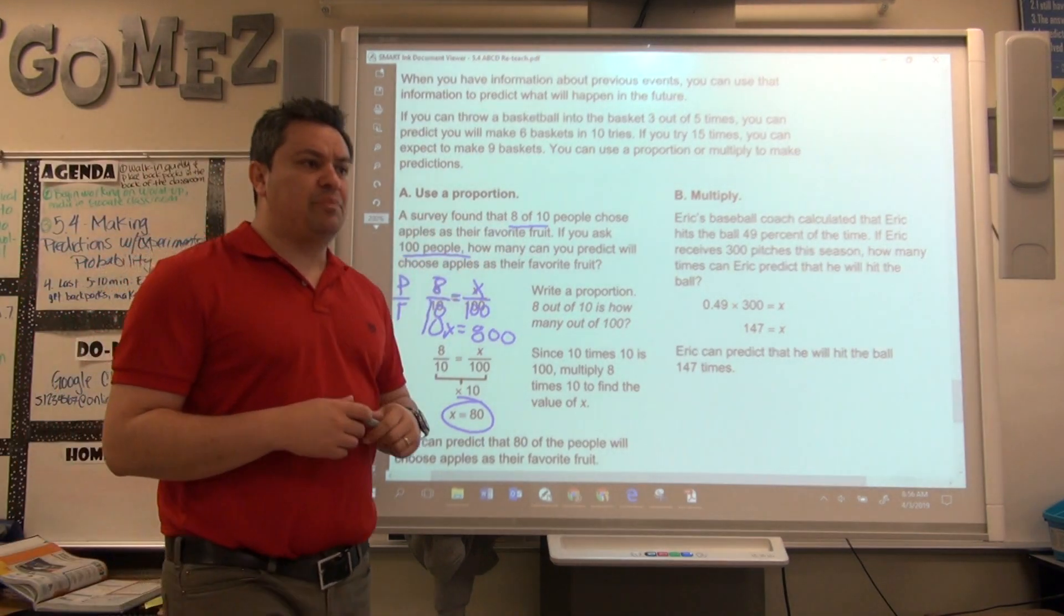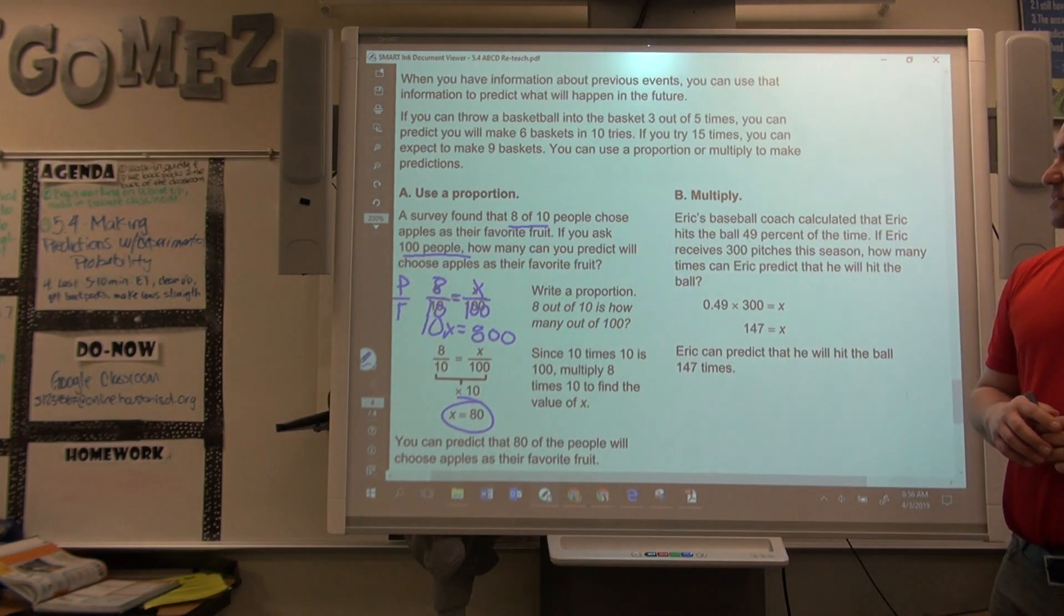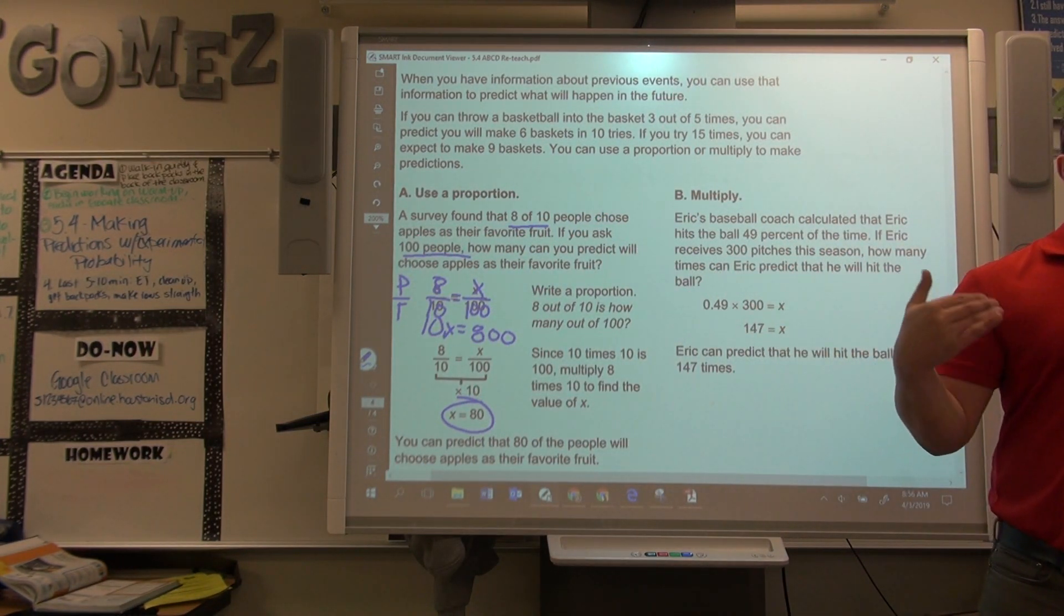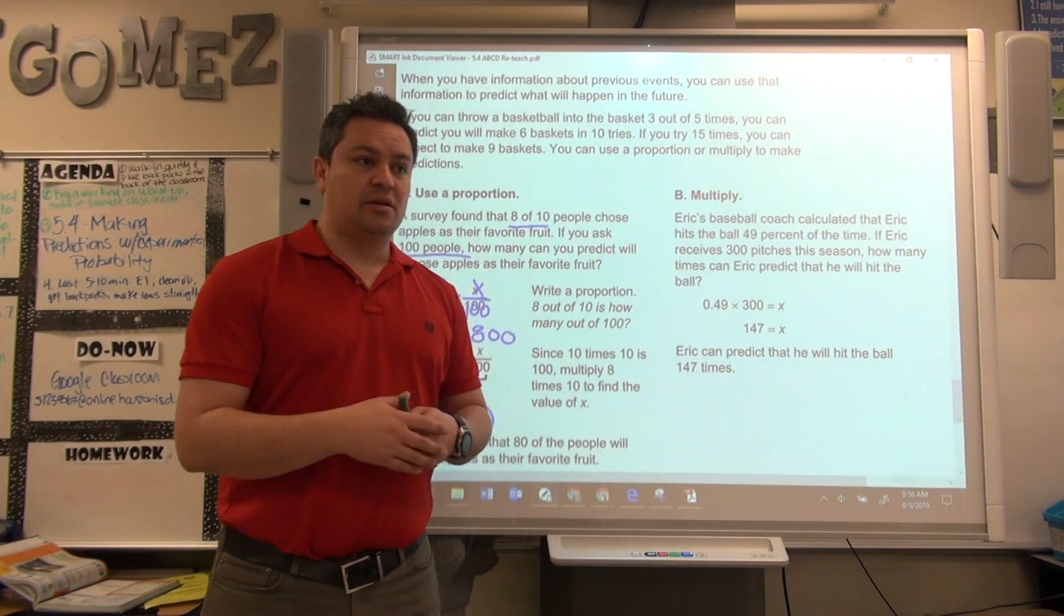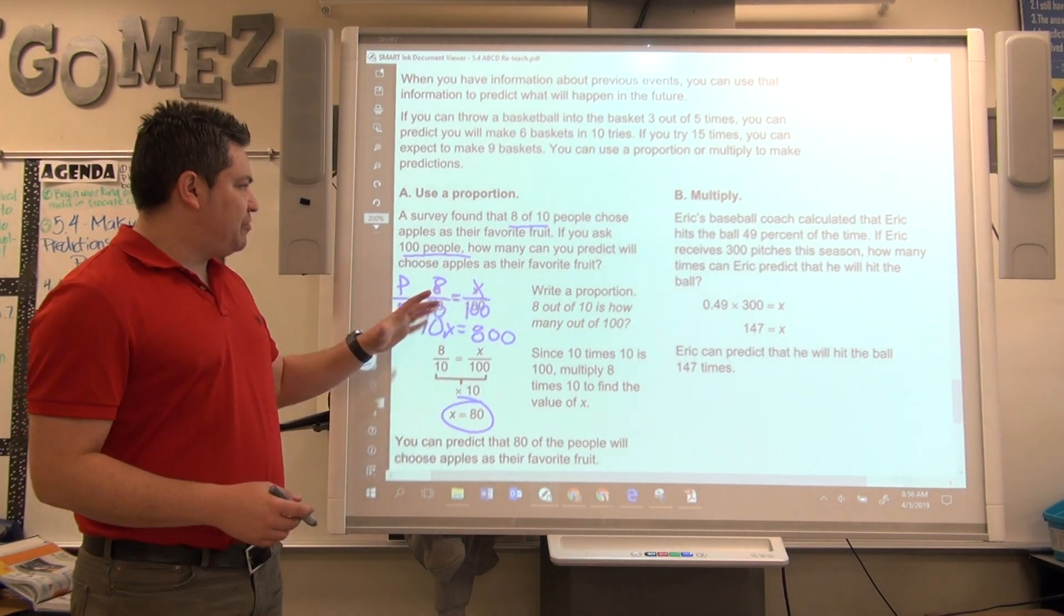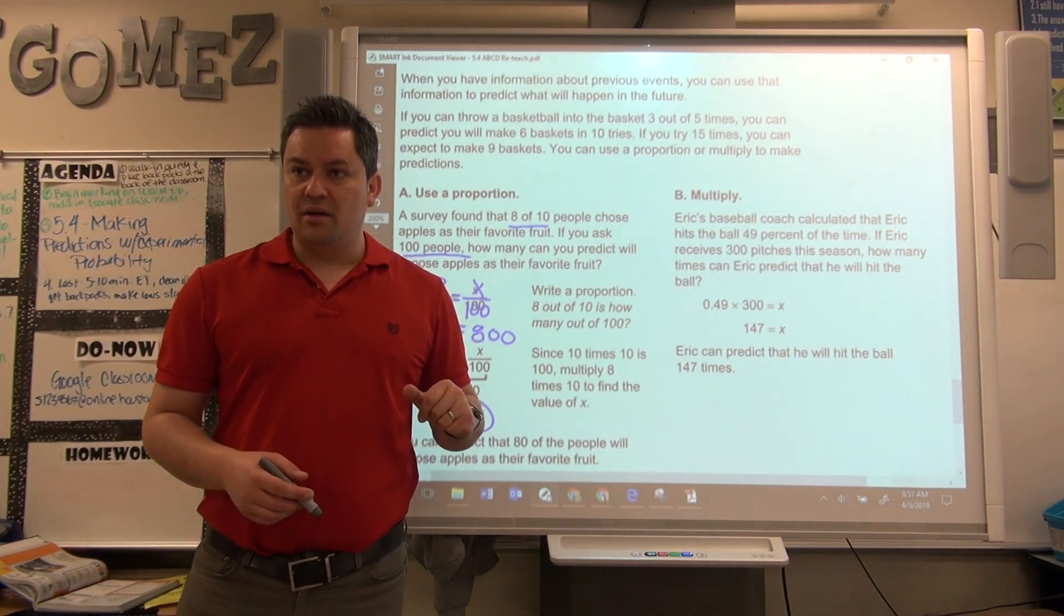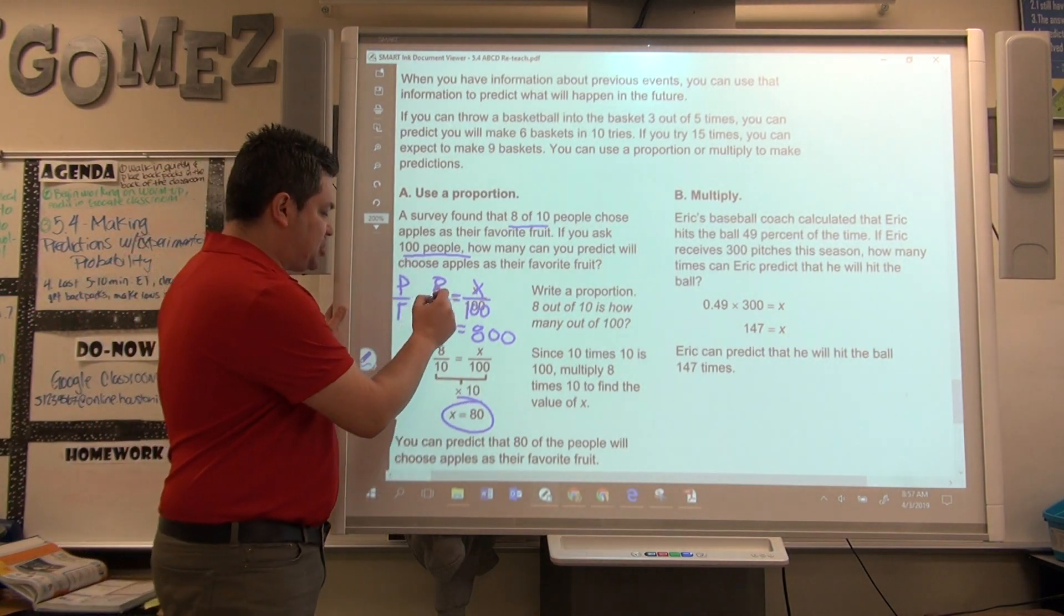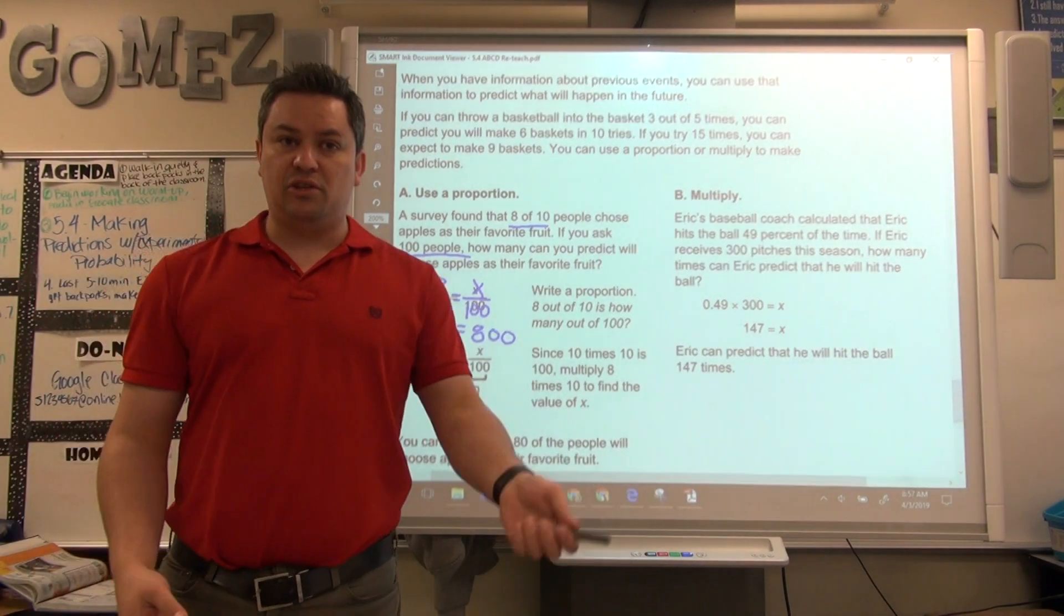Now, the other example is how to do it multiplying. And let's look at this example. This is going to work whenever you have the percent given to you already. Whenever you already have your percent, you can just multiply. How will you find the percent if you're using a proportion?